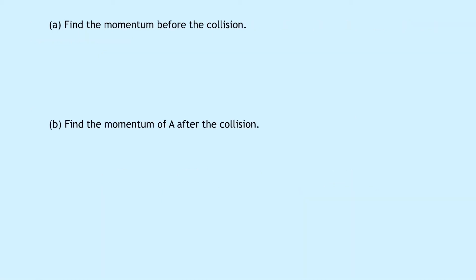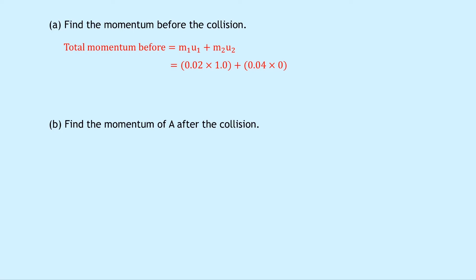Part A says to find the momentum before the collision. We use the expression M1U1 plus M2U2. Substituting in the numbers: 0.02 times 1.0 plus 0.04 times 0. That term times by zero disappears, giving us a total momentum before of 0.02 kilogram meters per second.